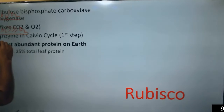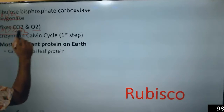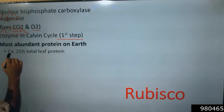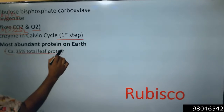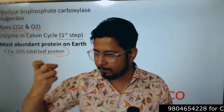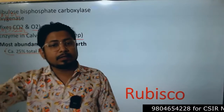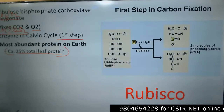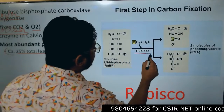Rubisco fixes both CO2 and O2 in the Calvin cycle. It is the most abundant protein on earth — 20 to 25% of the total leaf protein is Rubisco. If you extract the leaf proteins, 25% of the whole protein will be Rubisco. Considering all the leaves available in the world, that makes Rubisco the most abundant protein on earth, and it is involved in the very first step of carbon fixation.